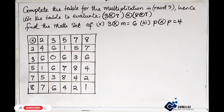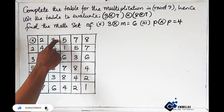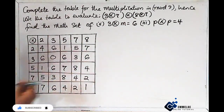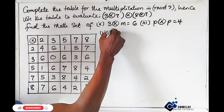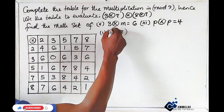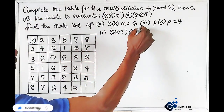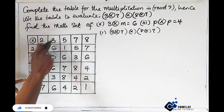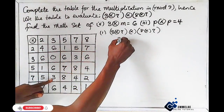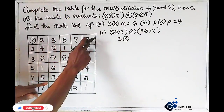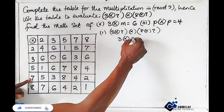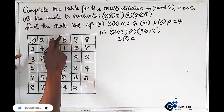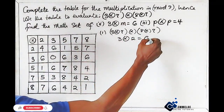Now let's evaluate the expressions using the table. For question one: (3×7) × (8×7) in mod 9. From the table, 3×7 = 3 and 8×7 = 2. Then 3×2 from the table gives 6, so the final answer is 6.